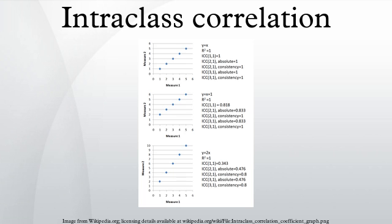The intraclass correlation is also defined for datasets with groups having more than two values. For groups consisting of three values, it is defined accordingly. As the number of values per group grows, the number of cross-product terms in this expression grows rapidly. The equivalent form, where k is the number of data values per group and the sample mean of the nth group, is simpler to calculate. This form is usually attributed to Harris.